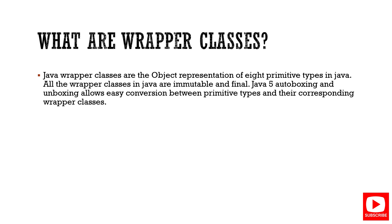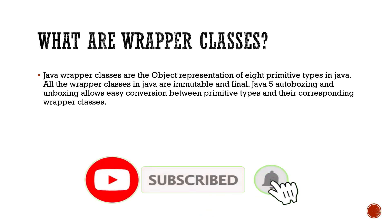Next question: what are wrapper classes? Wrapper classes are object representations of primitive data types — for example, Integer for int and Character for char. We use them when we need an object reference for a primitive type. All wrapper classes in Java are immutable and final. They are also useful for conversions between types, such as integer to character or to string. I hope this session is useful — subscribe for more questions in future.